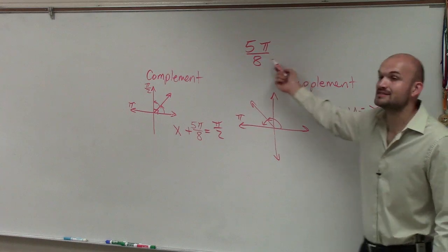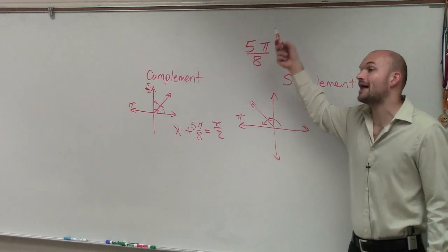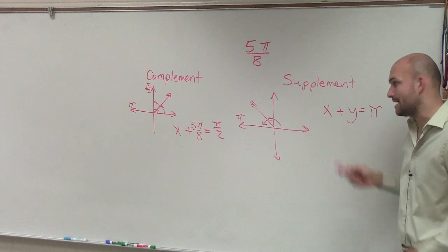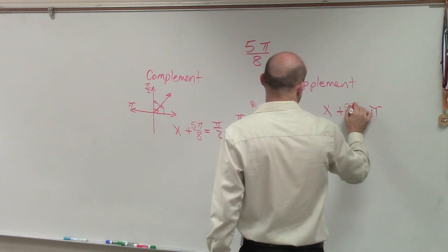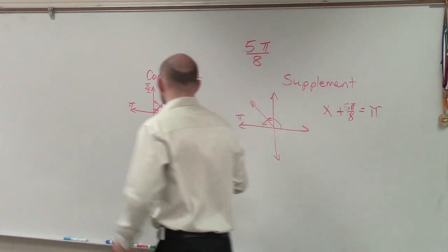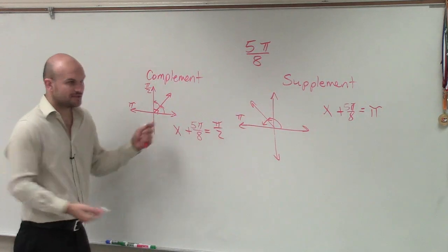So when I say find the supplement of this angle, I'm saying what angle added to 5π/8 gives you π. And again, we already know what that one angle is, which is 5π/8. So now we just have an algebra problem. All we've got to do is solve for x.